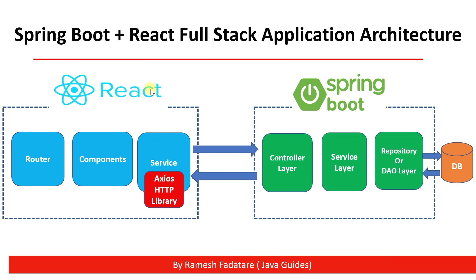In the Service class we need to use a third-party library to make a REST API call, because React is not concerned with HTTP. We have to use a third-party HTTP library to make REST API calls from a React application. Axios is one of the popular HTTP libraries we can use to make REST API calls from React.